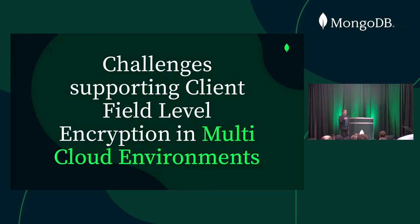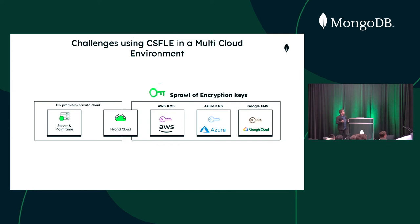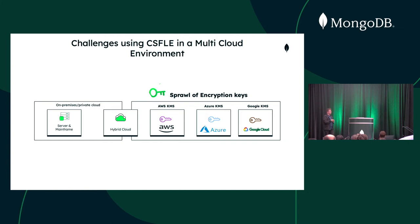Now let's put this in the context of multi-cloud. If you have three different cloud providers — AWS KMS, Azure Key Vault, and Google KMS — and you have applications or data deployed across all of them, how do you manage the keys? Each cloud provider has a different way of managing keys, which makes it complex. And if you want to migrate from one cloud provider to another, you need to decrypt the data and re-encrypt it in the target provider.